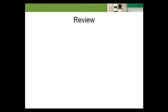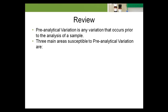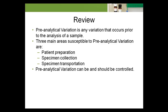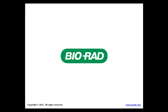Let's review what we've learned about pre-analytical variation. Pre-analytical variation is any variation that occurs prior to the analysis of a sample. Three main areas susceptible to pre-analytical variation are patient preparation, specimen collection, and specimen transportation. Pre-analytical variation can be, and should be, controlled. For all of your laboratory QC needs, go to www.qcnet.com. We'll see you in our next section.